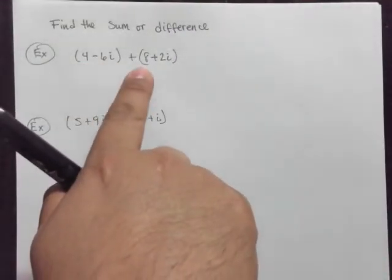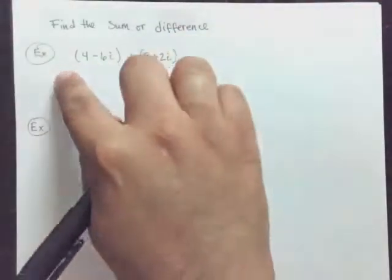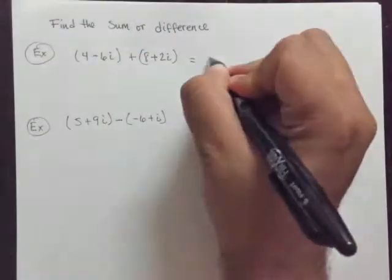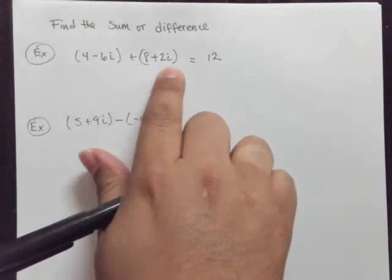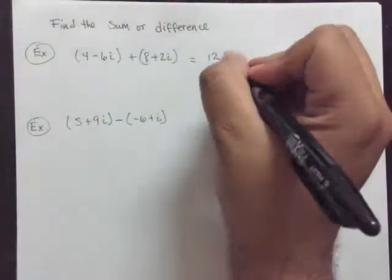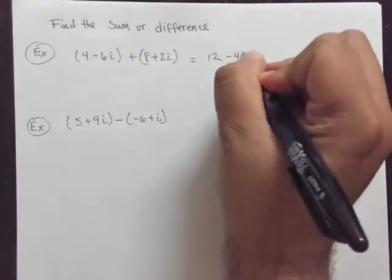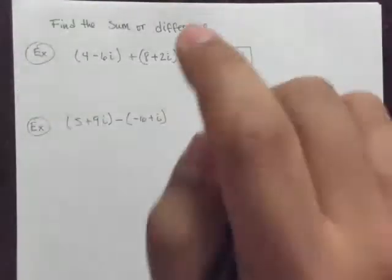So in this case, the 4, the only thing you can combine it with is the 8. So 4 plus 8 is 12. And negative 6i plus 2i is negative 4i. So there you go. 12 minus 4i is the sum in this case.